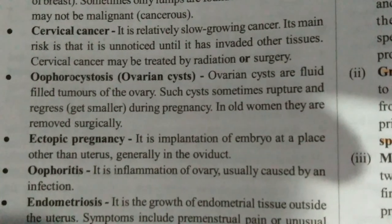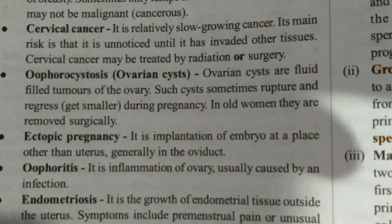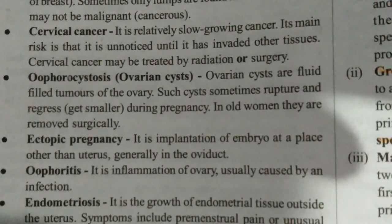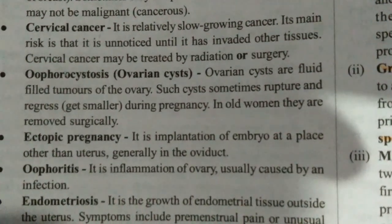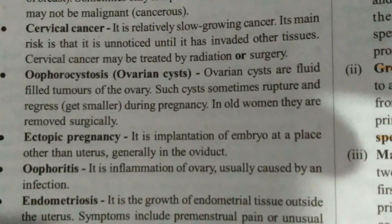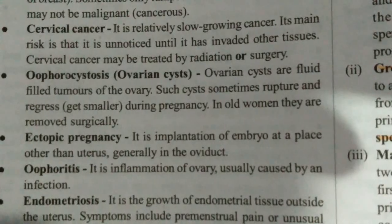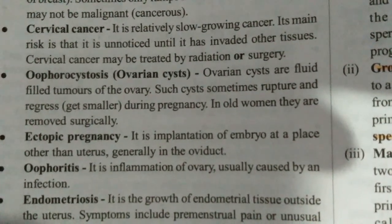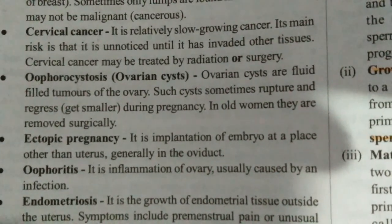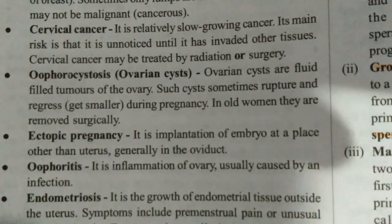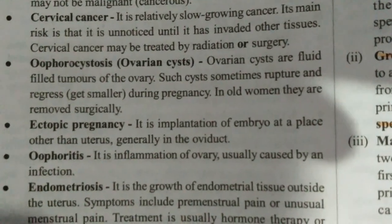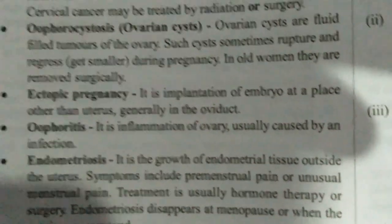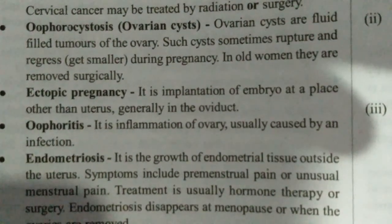Next, there are ovarian cysts. Sometimes fluid-filled tumors get formed inside the ovaries. Usually they rupture and regress during pregnancy. In women who have passed the reproductive age, they can be surgically removed.